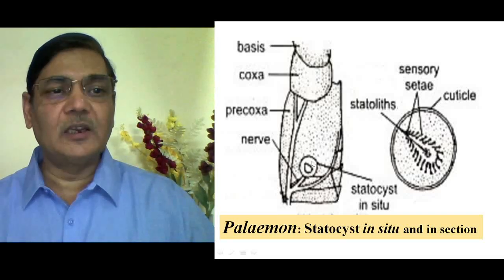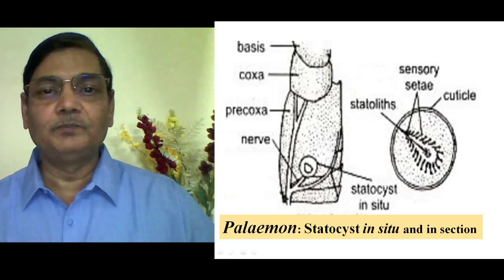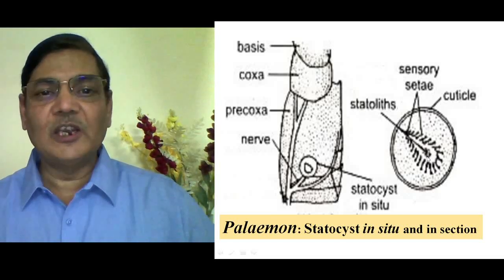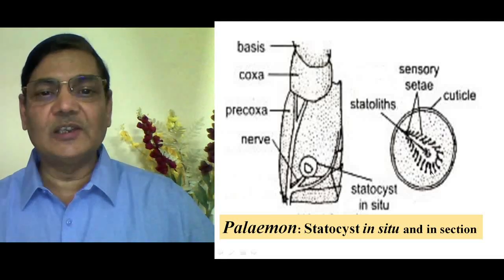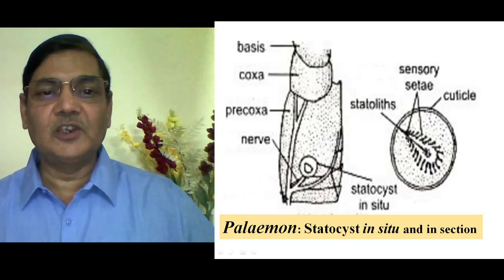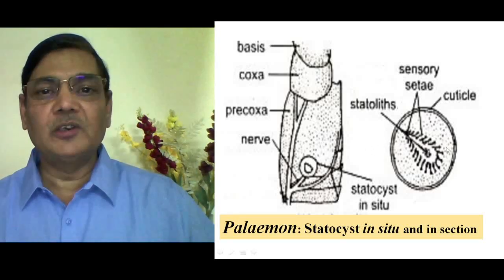You can then see that internally there is a small, round structure which is slightly darker in color. That structure is the Statocyst, and you can locate it. Then make a cut of this structure with a blade, and if you observe the transverse section of the Statocyst under a microscope, you can see that centrally there are many sand particle-like structures which are actually Statoliths. Around them, sensory cells are present. If these cells get stimulated, this information will be conveyed to the brain and other parts of the animal's body. Around it, a connective tissue sheet is present, and the outermost layer is made up of cuticle.